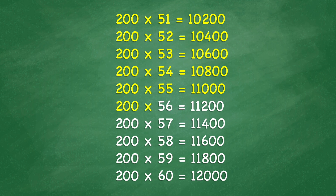200 times 56 equals 11,200. 200 times 57 equals 11,400. 200 times 58 equals 11,600. 200 times 59 equals 11,800. 200 times 60 equals 12,000.